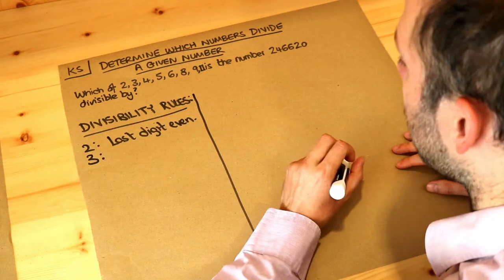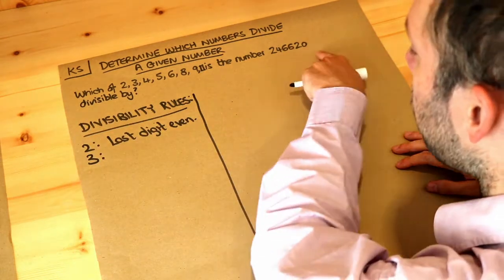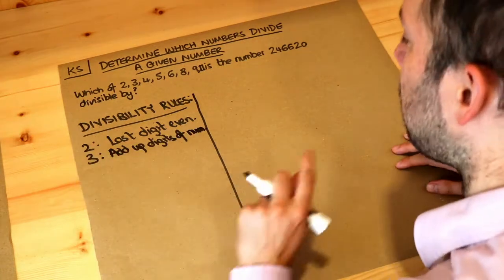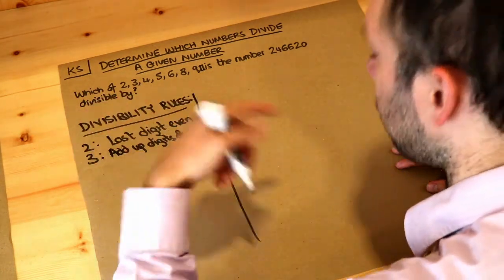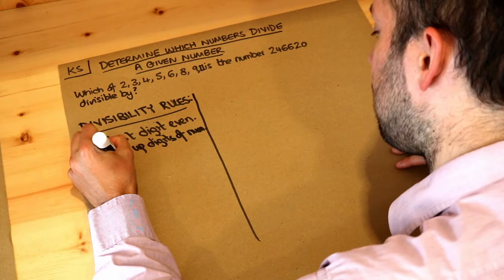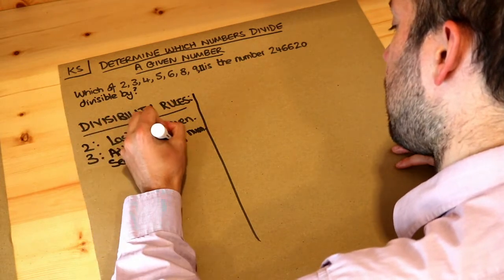For 3, now this is quite clever. What you do is you add up all the digits of the number and you see if that total is divisible by 3, it's in the 3 times table. So see if the total is a multiple of 3.